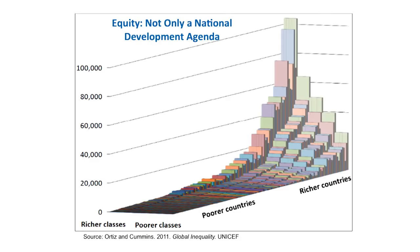We are talking mostly about a national development agenda, but it has limits. The big disparities are international, so it's very important to address inequality in an international development agenda through adequate trade arrangements, international finance, and others. Thank you.